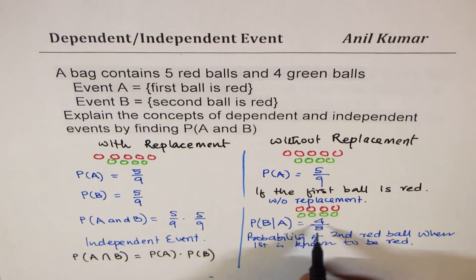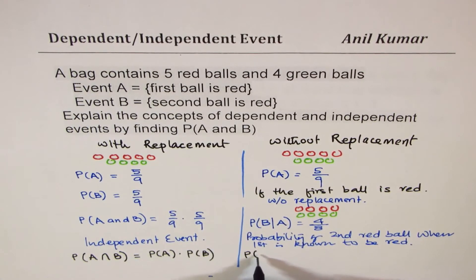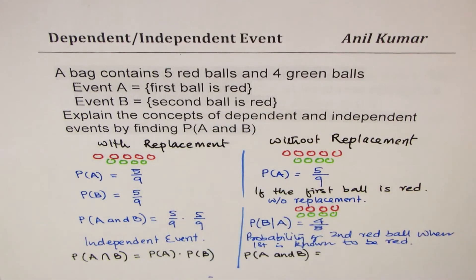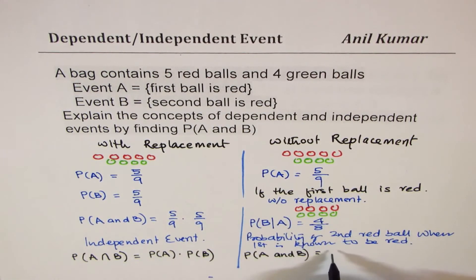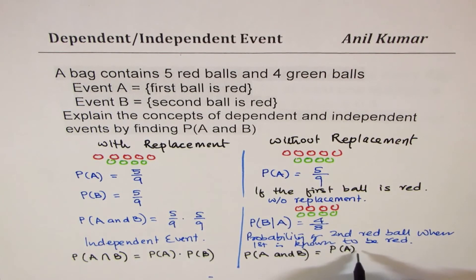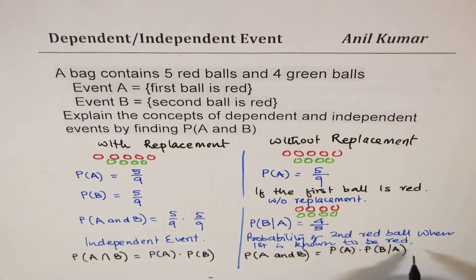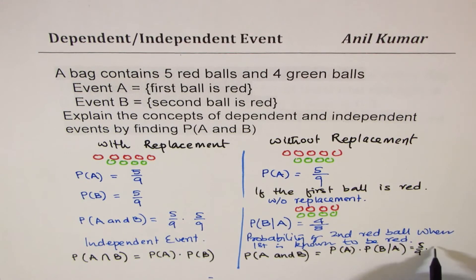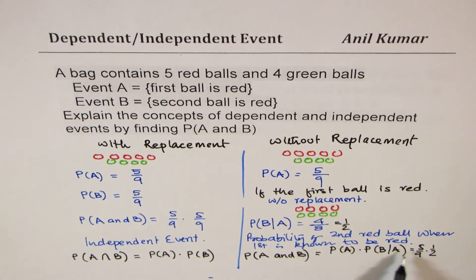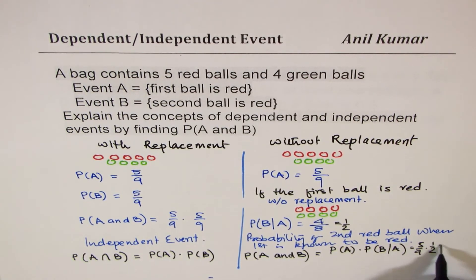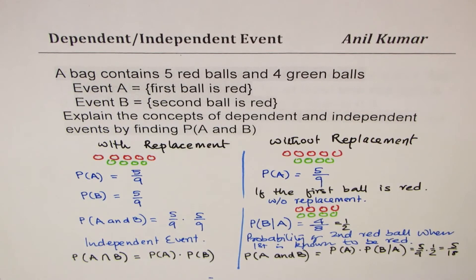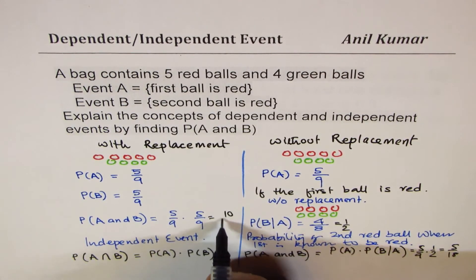In this particular case, the probability of A and B both happening — meaning two red balls — is their product: probability of A times the conditional probability of B given A has happened. That is five out of nine times one half, which equals five over eighteen. That is how we get the probability for a dependent event. In the independent case it was 10 over 81.